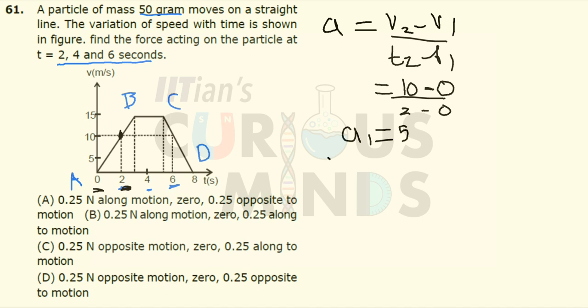Similarly, for the second case, let me write this as A1 and A2. For A2, it will be equal to 0 because from B to C, the body's velocity is constant. So the acceleration is not happening.